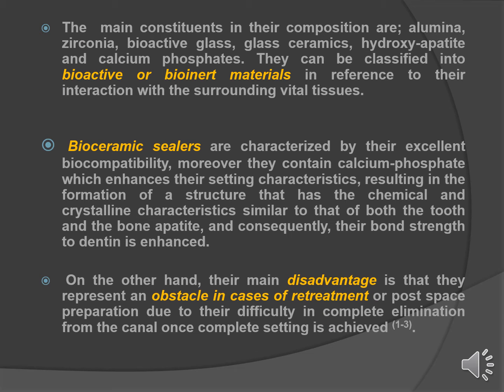The main constituents in their composition are alumina, zirconia, bioactive glass, glass ceramics, hydroxyapatite, and calcium phosphates. They can be classified into bioactive or bioinert materials in reference to their interaction with the surrounding vital tissues. Bioceramic sealers are characterized by their excellent biocompatibility. Moreover, they contain calcium phosphate, which enhances their setting characteristics, resulting in the formation of a structure with chemical and crystalline characteristics similar to that of both the tooth and bone apatite, and consequently their bond strength to dentine is enhanced.